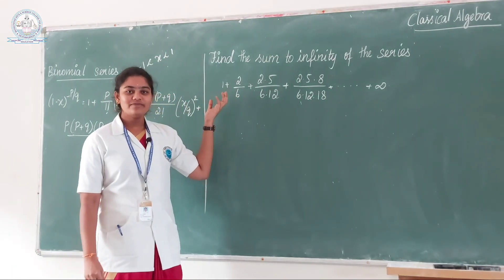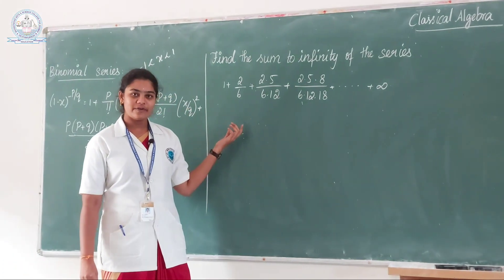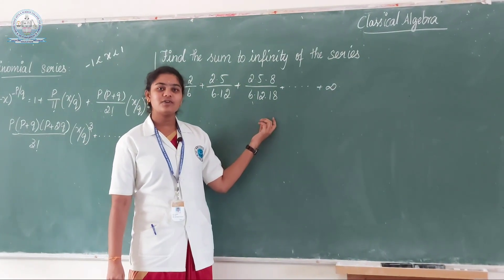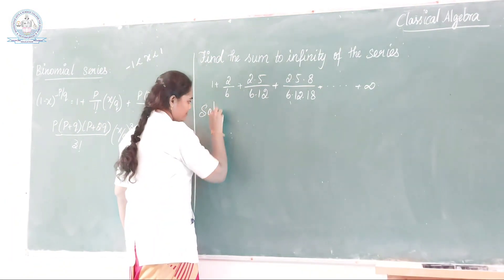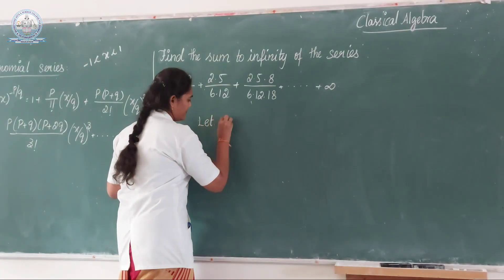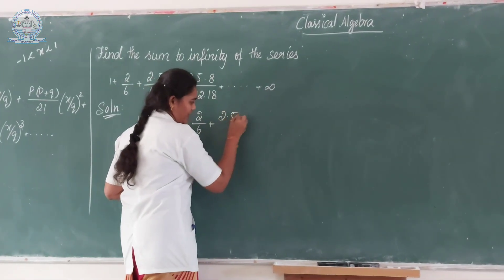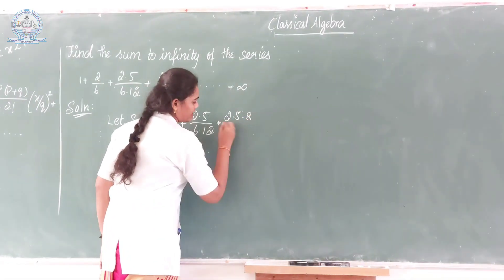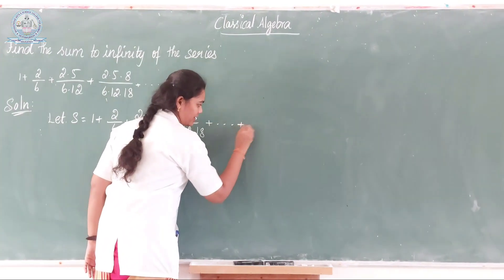Now see the problem for this binomial series. Find the sum to infinity of the series: 1 plus 2 divided by 6 plus 2 dot 5 divided by 6 dot 12 plus 2 dot 5 dot 8 divided by 6 dot 12 dot 18, up to infinity. Let s be equal to this series.